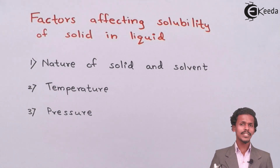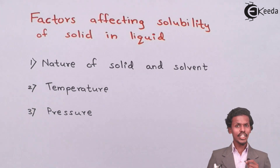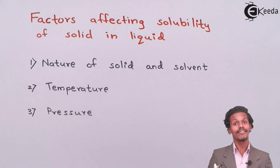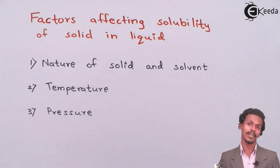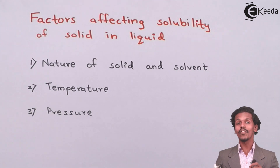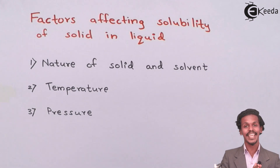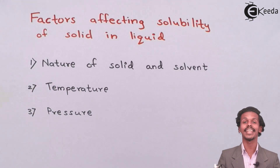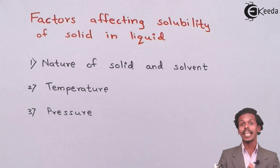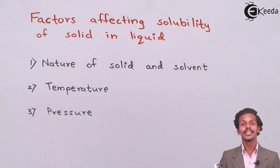Suppose if you have a solute which is polar and you are dissolving it in a solvent which is also polar — as you know, like dissolves like. So therefore a polar solute can be easily soluble in a polar solvent. Similarly, a non-polar solute can be easily soluble in a non-polar solvent.